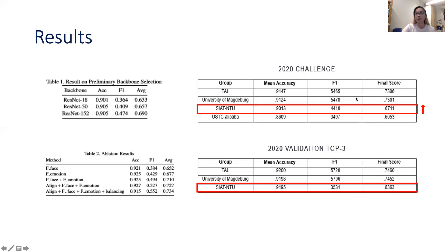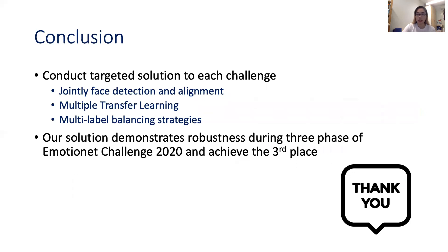Last but not least, comparing the final results to the validation phase, our method does not decrease performance but rather improves it, which shows our method's robustness. To conclude, in this year's EmotioNet challenge, we conducted targeted solutions to address each challenge, and our solution demonstrates robustness. Finally, we achieved third place. That's all, thank you.